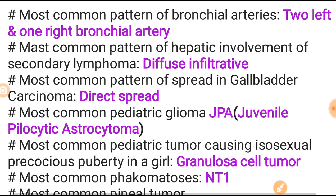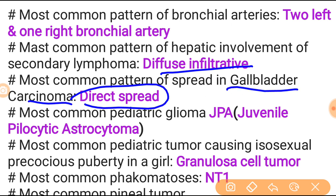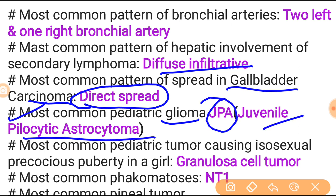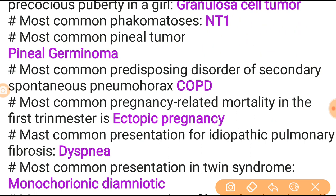Most common pattern of hepatic involvement in secondary lymphoma is diffuse infiltrative. Most common pattern of spread in gallbladder carcinoma is direct spread. Most common pediatric glioma is JPA - juvenile pilocytic astrocytoma - also in the important topics for radiological structure. Most common pediatric tumor causing isosexual precocious puberty in girls is granulosa cell tumor. Most common phakomatosis is neurofibromatosis type 1. Most common pineal tumor is pineal germinoma.